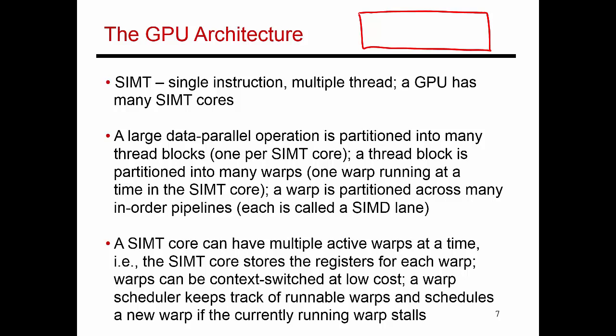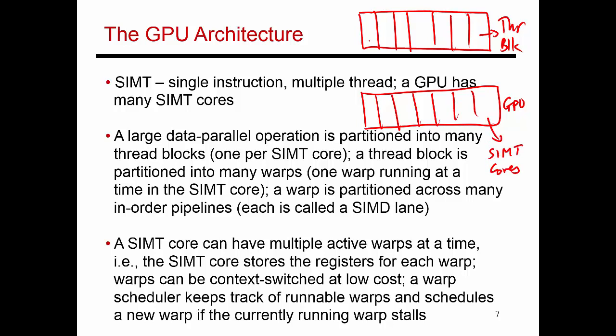The first thing I do is I take this entire data set and I partition it into many thread blocks. Each one is referred to as a thread block. If I look at my GPU hardware itself, the GPU hardware itself is broken up into a large number of what are called SIMT cores. One thread block is made to execute on one SIMT core. The thread block itself is partitioned into what are called warps.